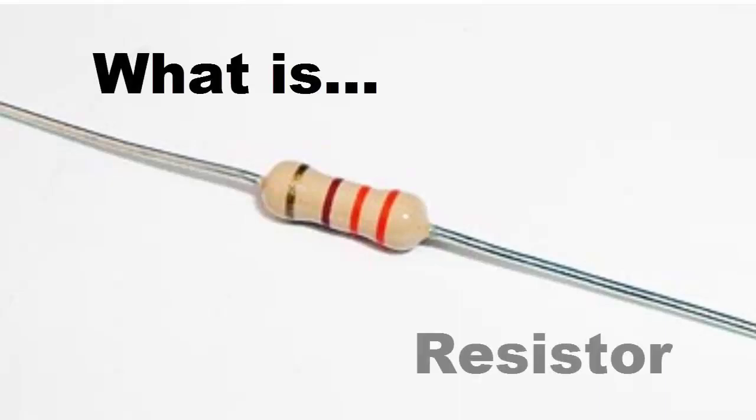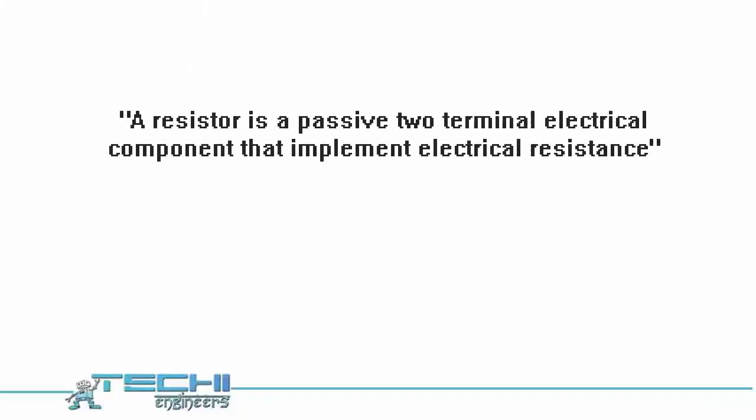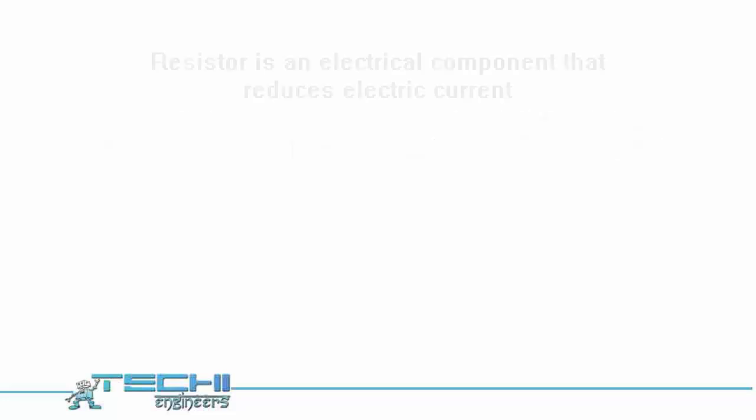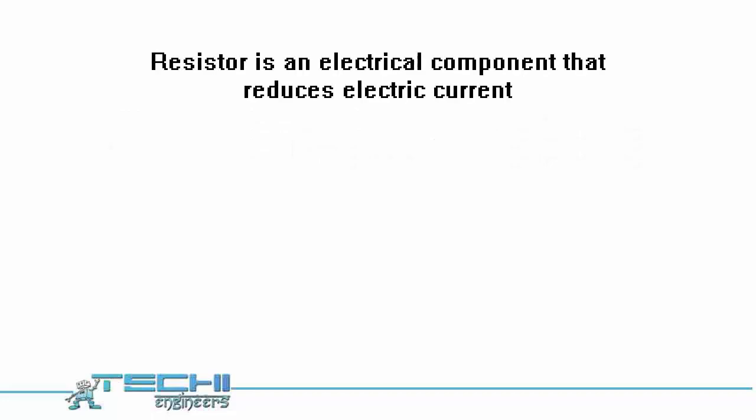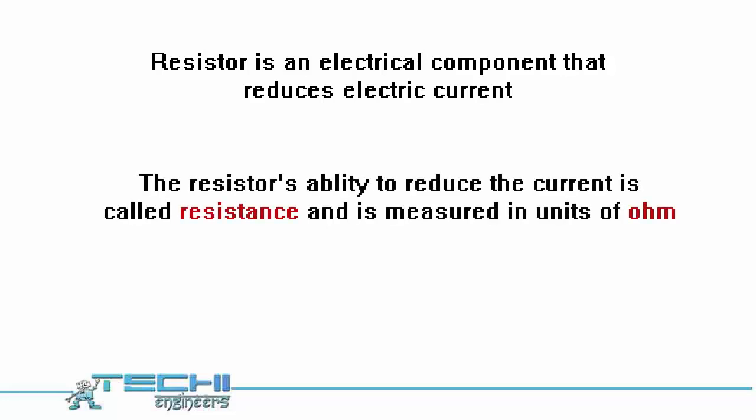What is a resistor? A resistor is a passive two-terminal electrical component that implements electrical resistance. More simply, a resistor is an electrical component that reduces electric current. The resistor's ability to reduce the current is called resistance and is measured in units of ohm.